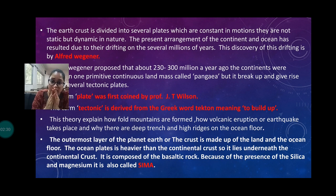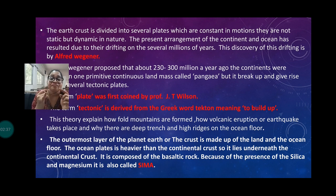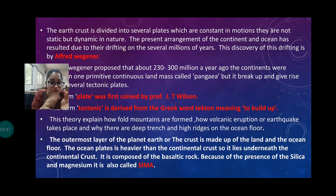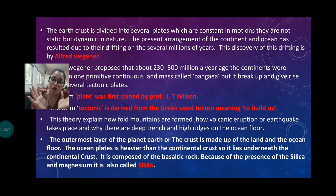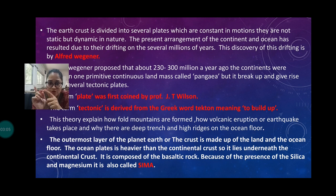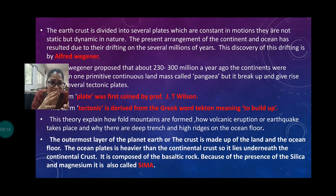What is Pangaea? In the northern hemisphere, continents like North America, Europe, and Asia were all together, and that is known as Laurasia. In the southern hemisphere, South America, Africa, and Australia were all together, and that is known as Gondwanaland. Between them there was the Tethys Ocean. Laurasia and Gondwanaland together are known as Pangaea, and surrounding this Pangaea, mainly water bodies are there, known as Panthalassa.